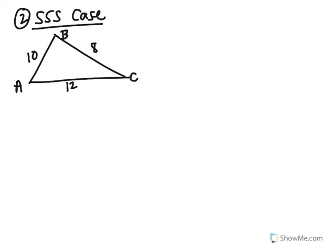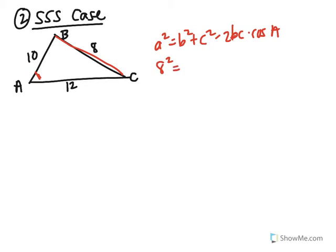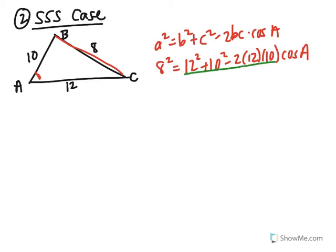Now let's do the side-side-side case, where you're given all three sides and your goal is to find the angles. Going alphabetically, let's find angle A first using side a. So: a squared equals b squared plus c squared minus twice bc times cosine of angle A. Plugging in: 8 squared equals 12 squared plus 10 squared minus twice 12 times 10 times cosine of angle A. People are often tempted to type it all into the calculator and divide then take cos inverse — but you can't do that because this portion is attached to and multiplying the cosine. You have to take it step by step.